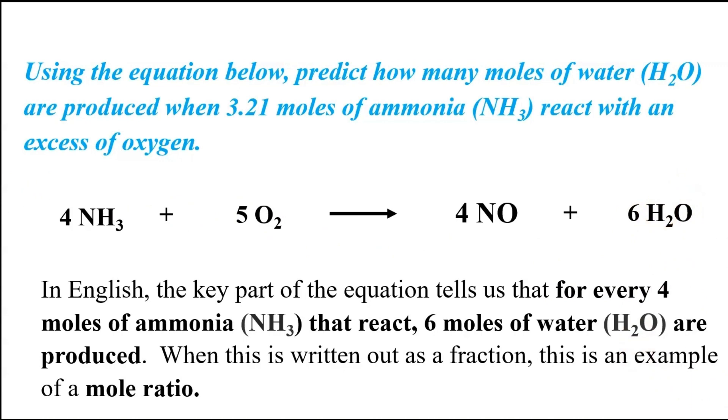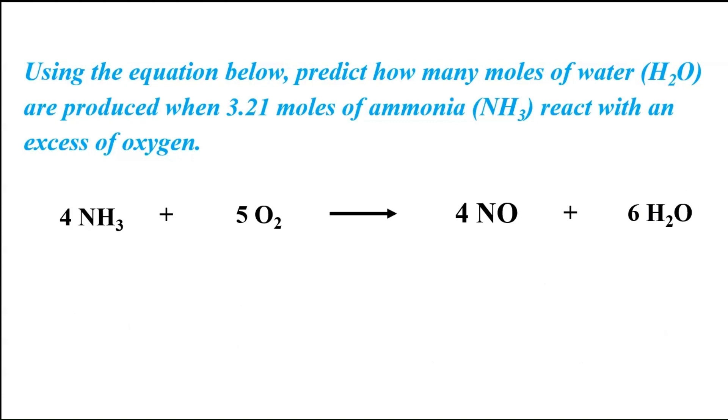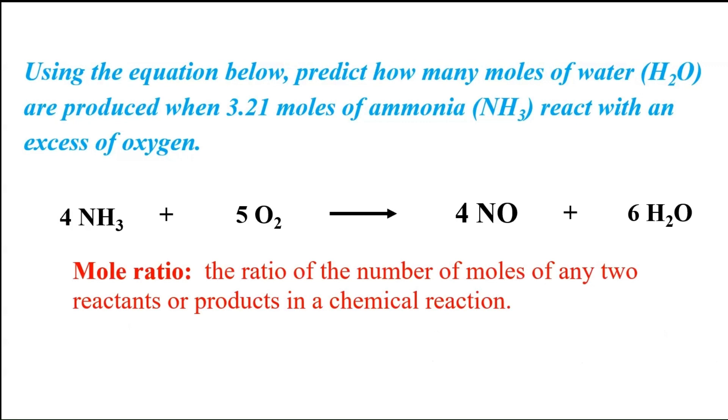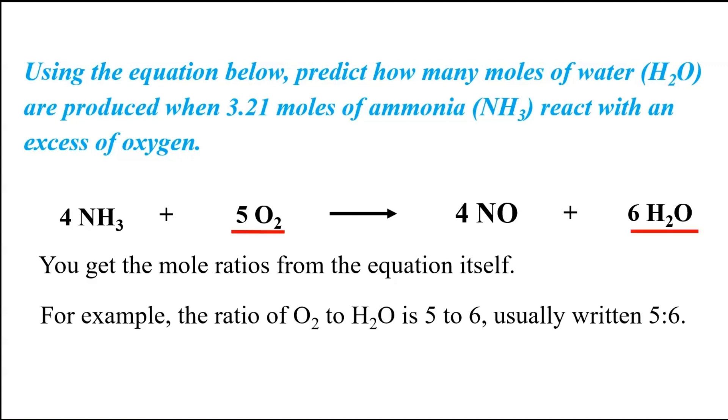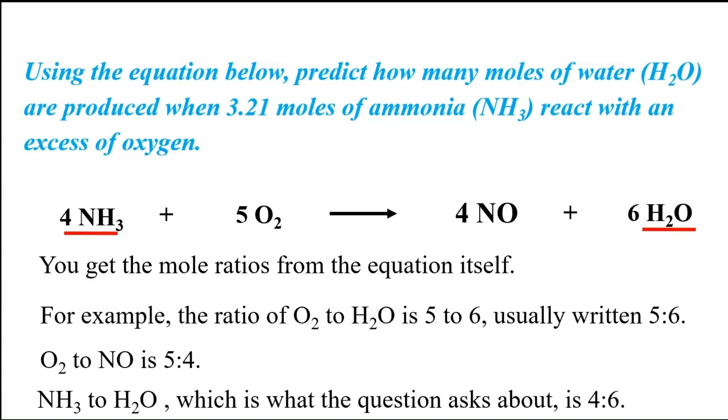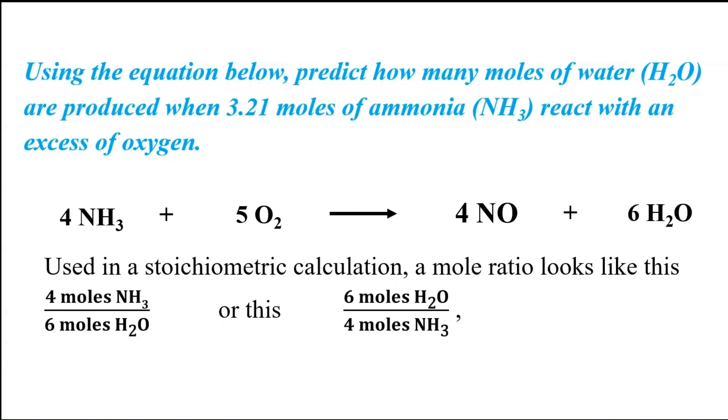When this is written out as a fraction, this is an example of what is called a mole ratio, and that's extremely important in stoichiometry. It's the ratio of the number of moles of any two reactants or products in a chemical reaction. But where do we get the mole ratios from to use as our conversion factors? That sometimes is a little bit of a stumbling block initially, but fortunately, they're going to be right in front of your face. You get the mole ratios from the equation itself. For example, the ratio of O2 to H2O is 5 to 6. O2 to NO is 5 to 4, and NH3 to H2O, which is the question that we're wondering about here, is 4 to 6.